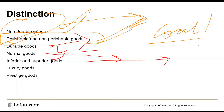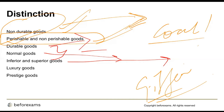Giffen goods were given by Sir Robert Giffen. In Ireland, poor people used to consume more potatoes — which were inferior goods — and less meat, which was not in their daily budget. When the cost of potatoes increased, consumption of potatoes also increased, defying the normal expectation that demand would decrease. This particular case gave rise to what we call Giffen goods.